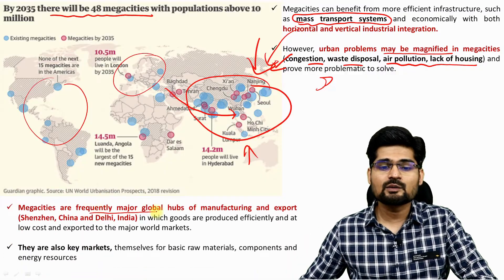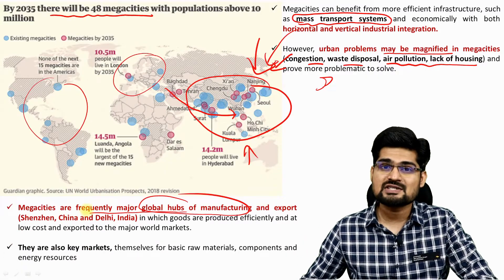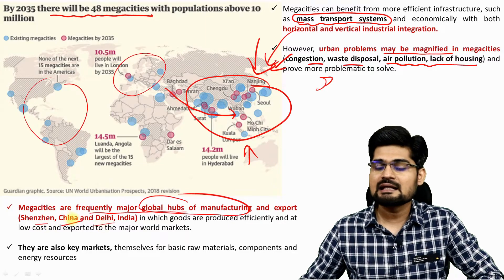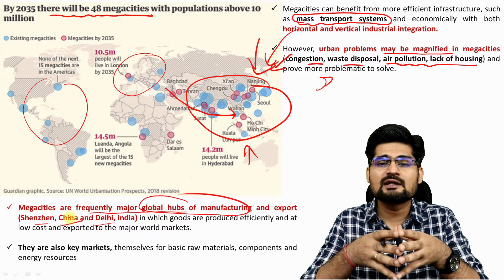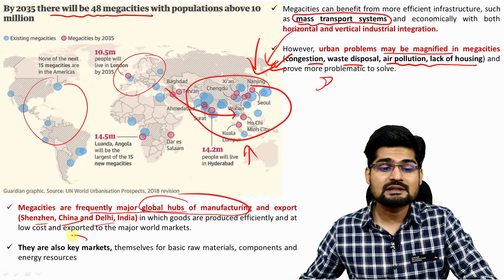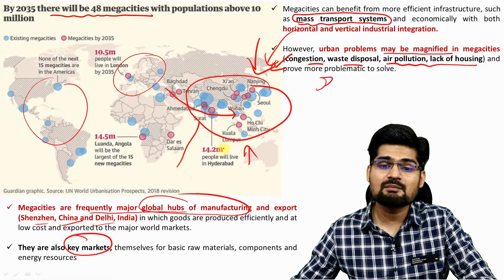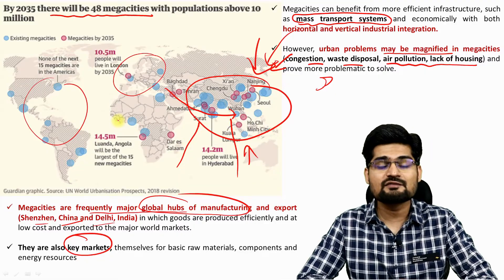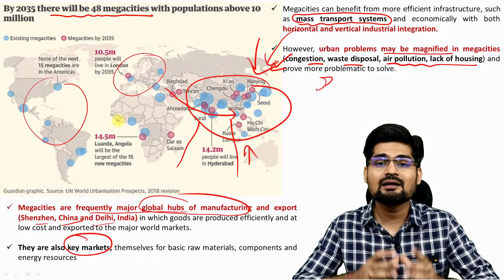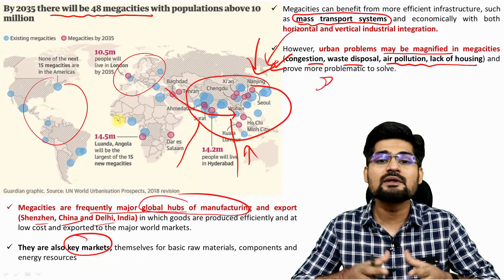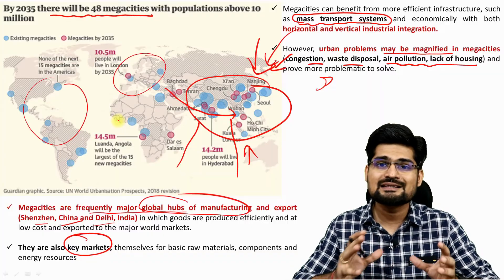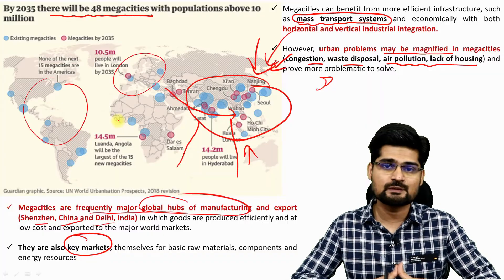Mega cities are frequently major global hubs of manufacturing and exports — for example, Shenzhen in China, Delhi, and Mumbai. They are also the key markets. All the multi-billion dollar industries are now coming to India and China because most of the bigger markets are here. That's where the economy is shifting, and with the economy, the rate of urbanization is also shifting towards these places.